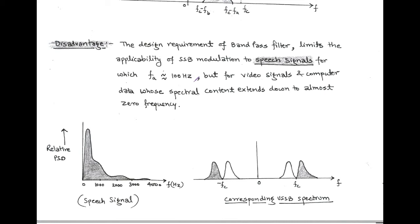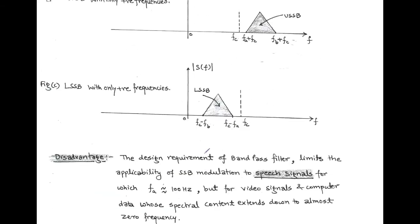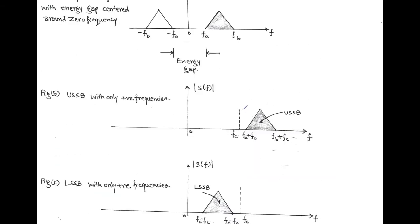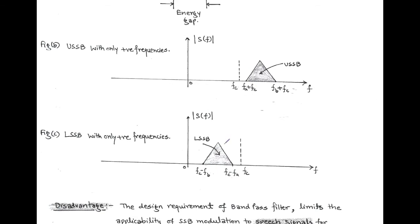A speech signal and its relative power spectral density show a lower frequency component of approximately 100 Hz and an energy gap of twice F_A, that is 200 Hz. The transition band of the bandpass filter is adjusted within this energy gap, and we get a desired sideband — whether it is upper single sideband or lower single sideband.